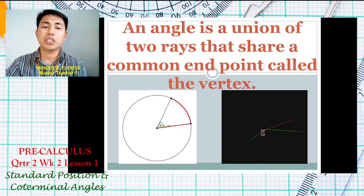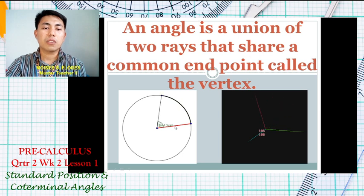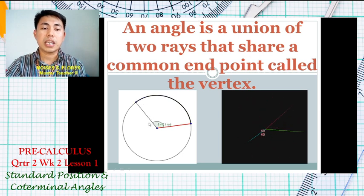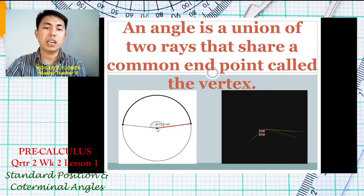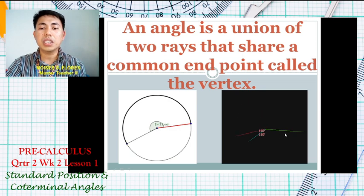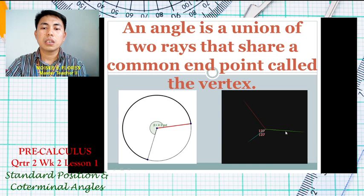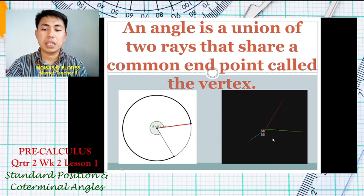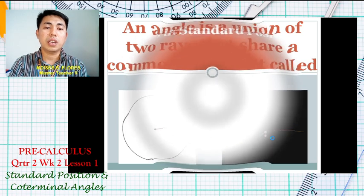As you notice from our examples, the ray in red is called the initial side, and the one that is moving is your terminal side. The intersection of those rays is called your vertex. Similarly, the green segment is called the initial side, and the one that is moving is also called the terminal side.